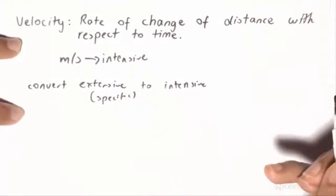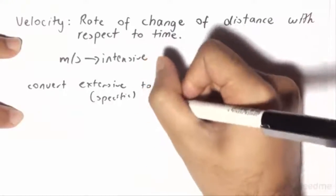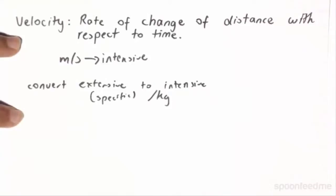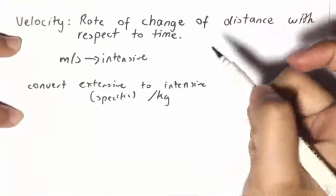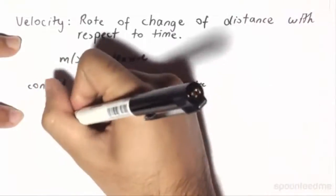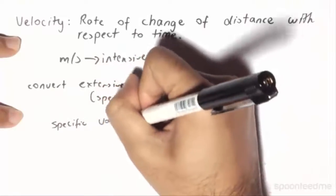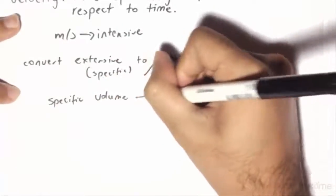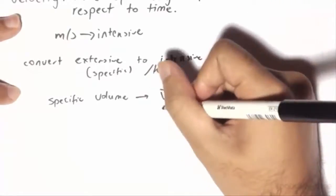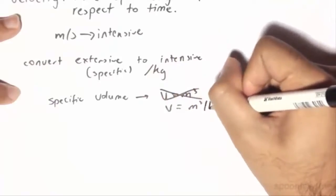So barring mass for obvious reasons, we will be quantifying extensive properties in terms of per kilogram as a manner of making the property intensive. For specific volume, we prefix the word with specific. So for specific volume, instead of having volume in meters cubed, it is now going to be volume in terms of meters cubed per kilogram.